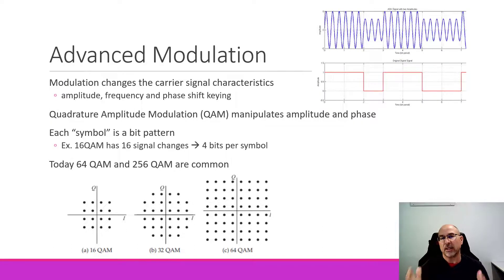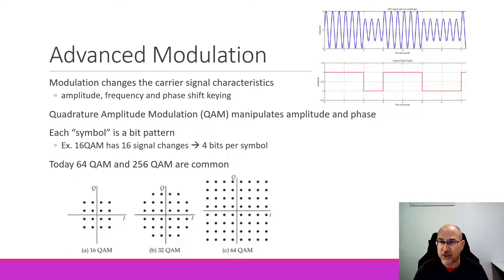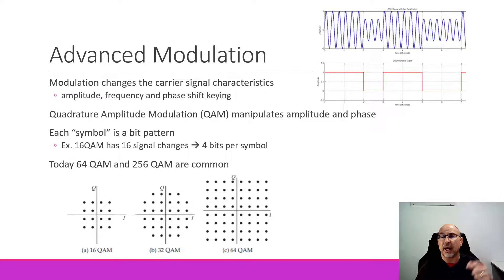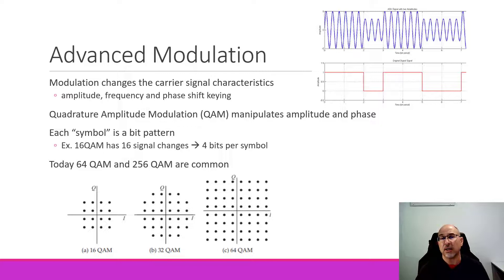A really important idea is the modulation itself. If you're trying to convey ones and zeros — the square wave — one way would be with amplitude shift keying, or ASK. You can see that the amplitude of the waveform grows or shrinks depending on whether it's a one or a zero. We can do the same thing with frequencies and with phase. Today we usually combine phase changes and amplitude changes for Quadrature Amplitude Modulation, or QAM, which is by far the most popular encoding technique.